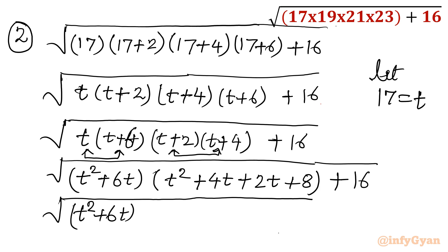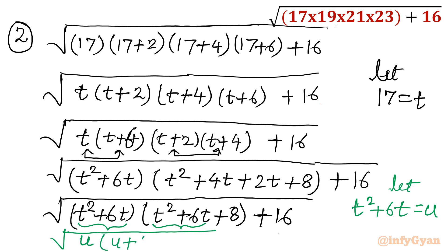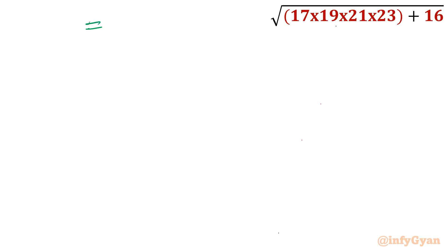Now we can consider t squared plus 6t and substitute this equal to u, so it converts into quadratic form. It becomes u times (u plus 8) plus 16, giving us u squared plus 8u plus 16, which is (u plus 4) whole squared. Taking the square root, this simplifies to u plus 4.